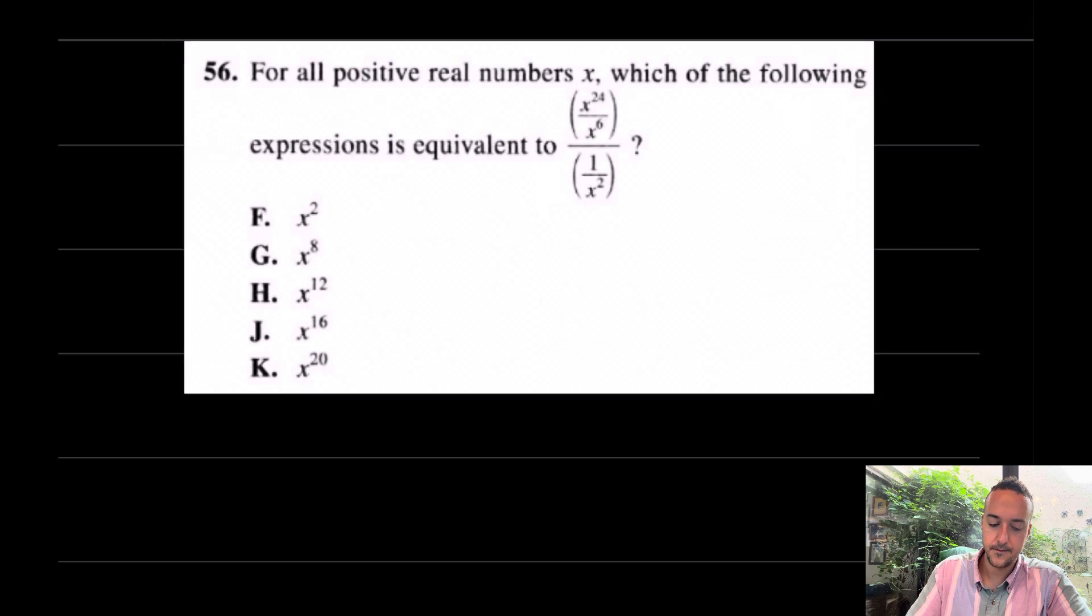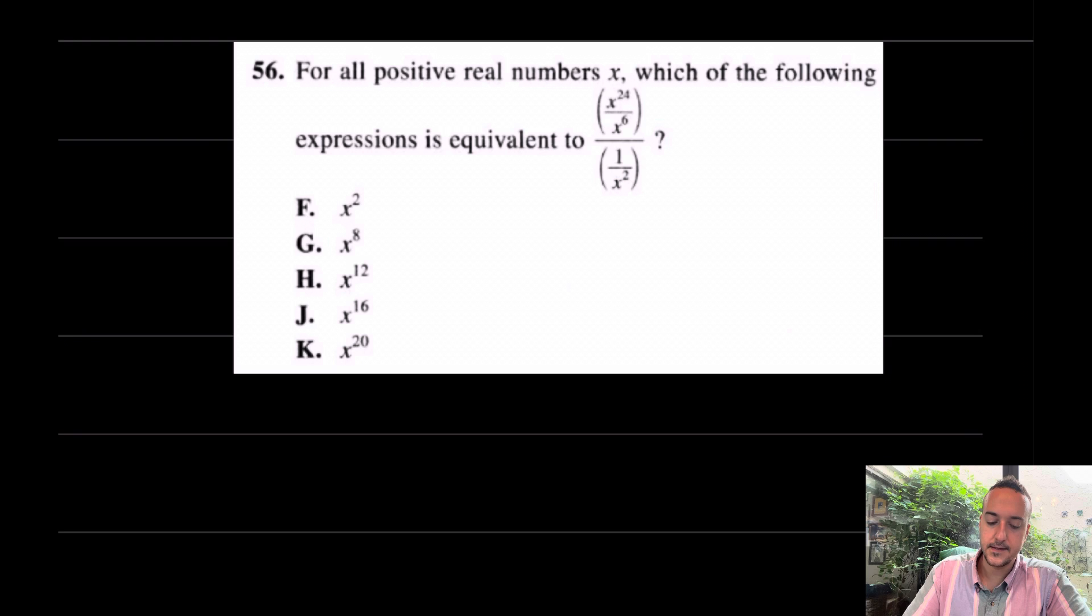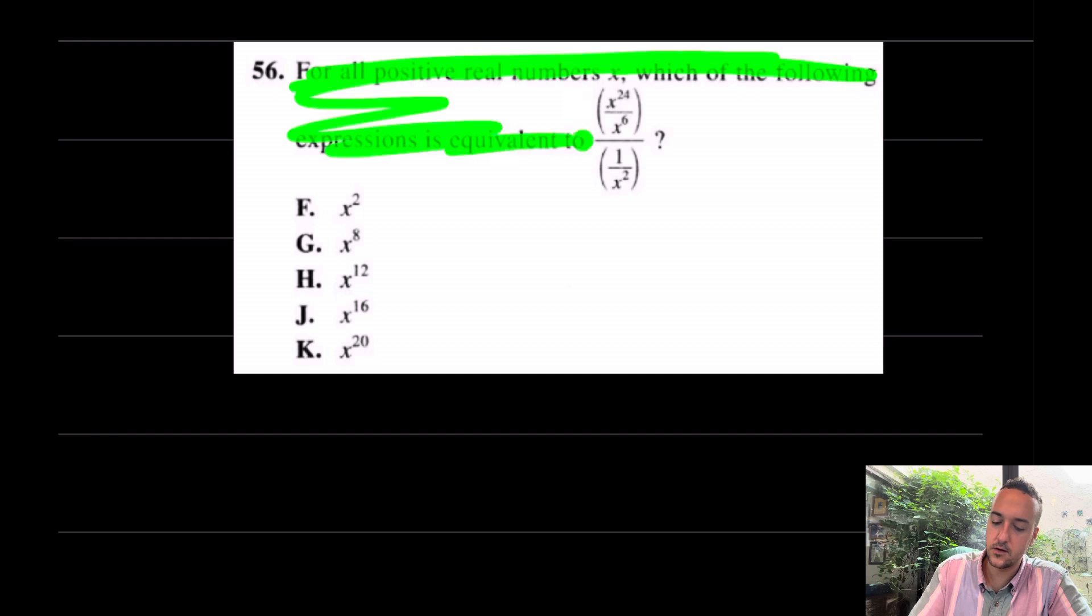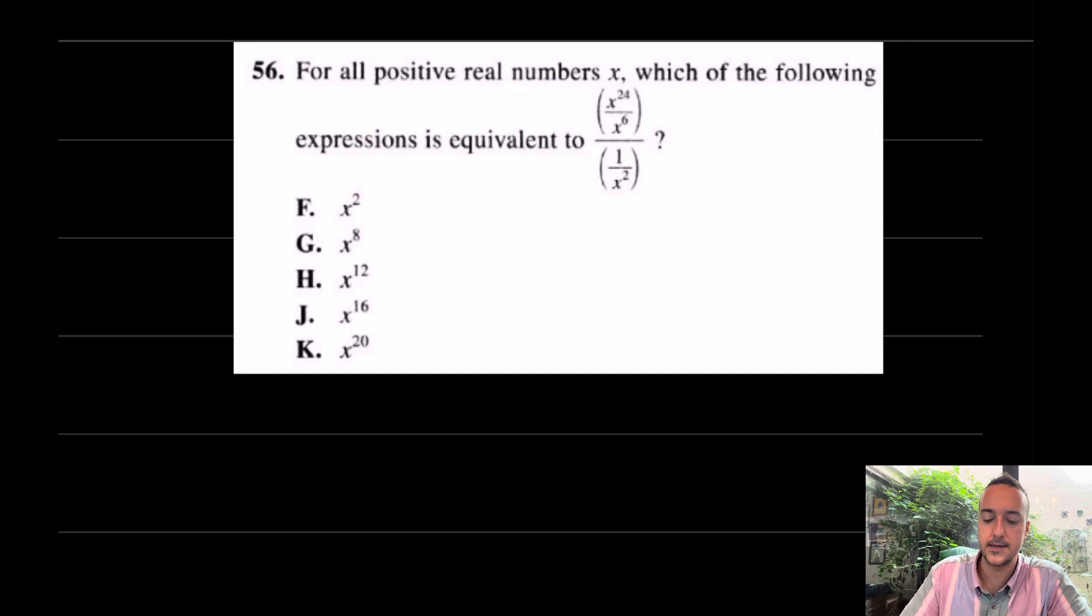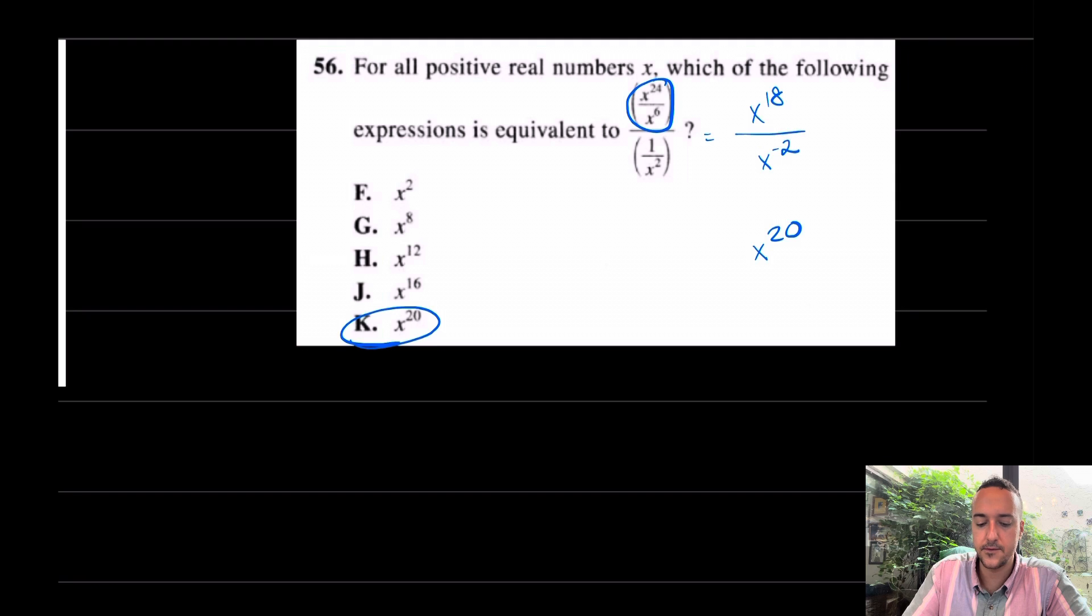Let's come over here for 56 now. 56 says, for all positive numbers, which of the following expressions is equivalent to this? Really, without even reading that, you should just know to simplify. I don't read a single thing when I take these tests. The first step that I see is that through division becomes subtraction, really X to the 18th over. Oh, wait a second. What is this? 1 over X squared? Isn't that X to the negative 2nd? And the last step here is recognizing that these X to the negative 2nds will go where? They will go to the top, leaving us with X to the 20th. I like K. That's at number 56. That's way too easy for us.